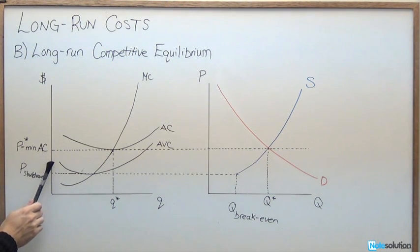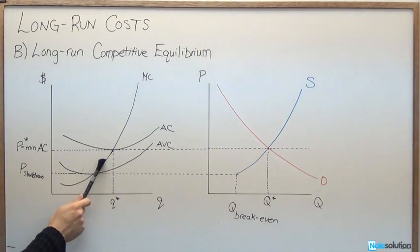We also saw that they could potentially earn an economic loss. So if the price was too low, then they would follow that marginal revenue equals marginal cost here, find that quantity, and then calculate what that economic loss rectangle would be.